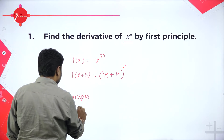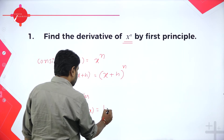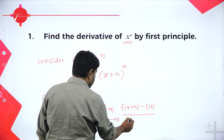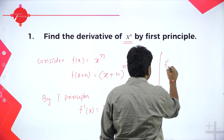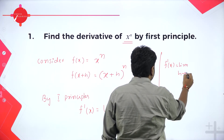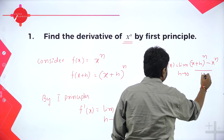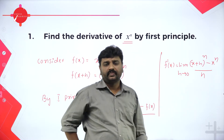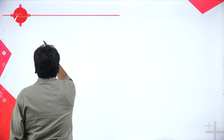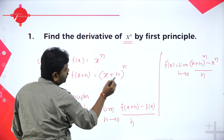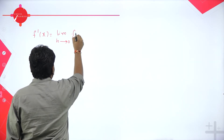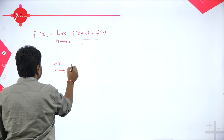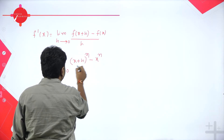By first principles, the derivative f'(x) equals the limit as h tends to 0 of [f(x+h) minus f(x)] divided by h. Substituting, f'(x) = limit as h tends to 0 of [(x+h)^n minus x^n] divided by h. If you put h=0 directly it becomes 0/0, so we need to simplify.